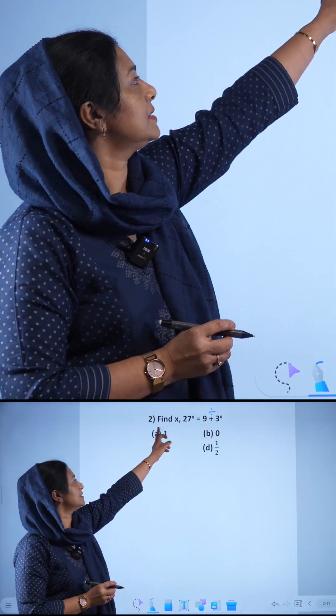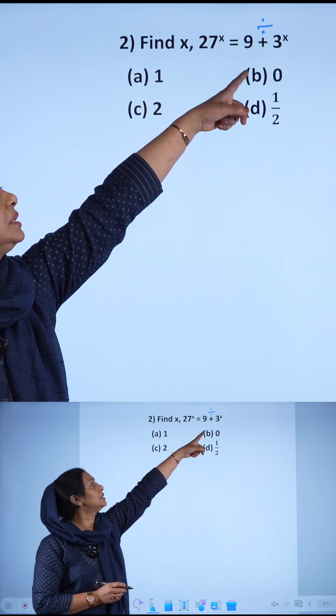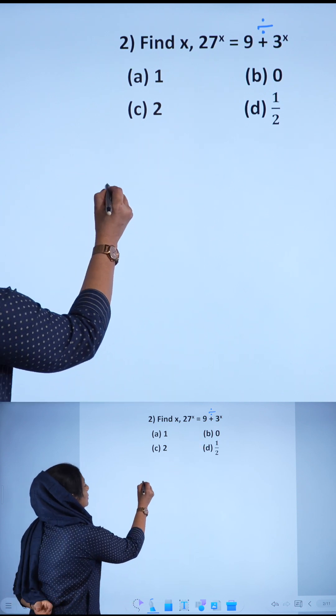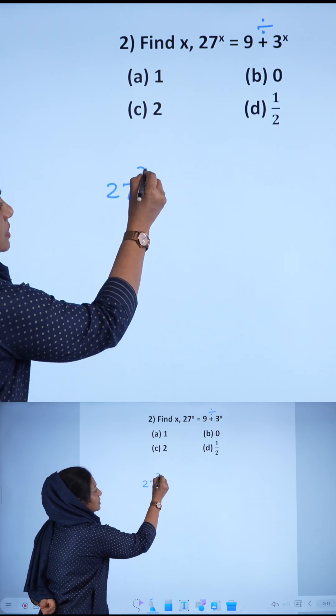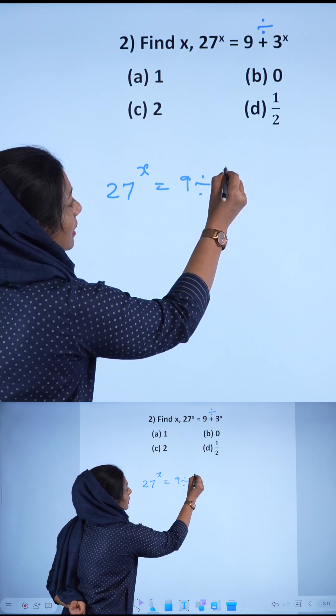The second question: find x, 27 raised to x is equal to 9 divided by 3 raised to x.